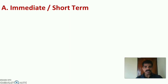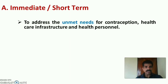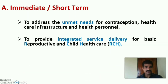Immediate or short-term objectives of National Population Policy 2000: To address the unmet needs for contraception, healthcare infrastructure, and health personnel. The second objective is to provide integrated service delivery for basic reproductive and child health care, integrating services with the RCH services.